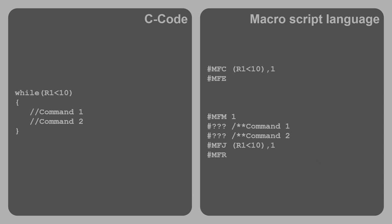To avoid re-running the loop we exit the macro with the MFE (macro file exit) command — we have now reached the end of the loop. The comparison of C code and macro script language shows clearly how the while loop works: it consists of two blocks — the known do-while loop, and an additional jump condition at the top. The disadvantage is that the condition occurs twice, so you must always remember to update it in both jump conditions.